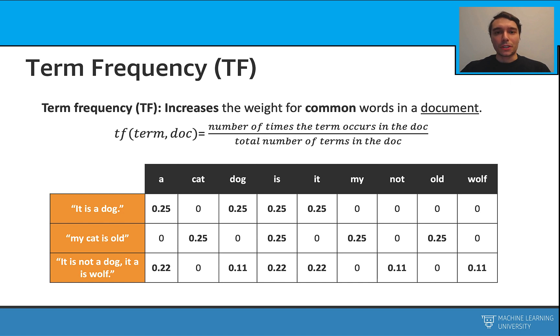Term frequency is similar to word counts. This time we are going to normalize the word counts by the total number of terms in that specific document. This increases the weight for common words in that specific document. And this is the equation for this. When we calculate the term frequencies for our example documents, this is what we have.